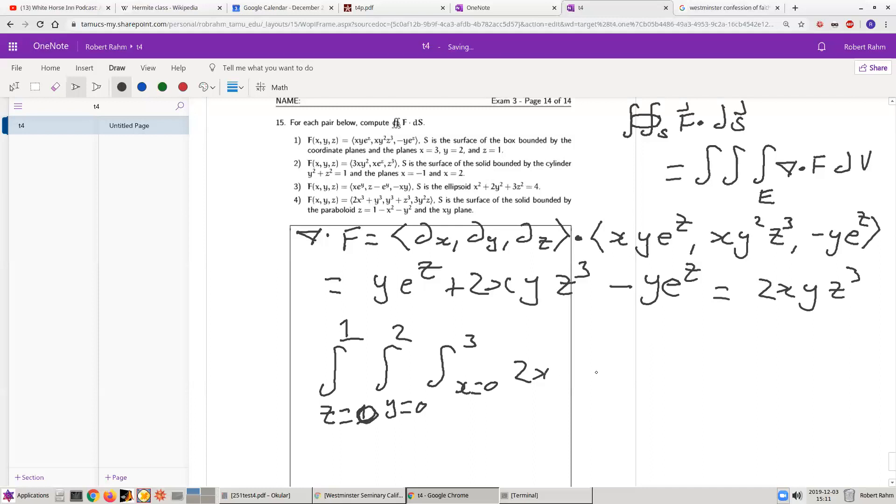and z will go from 0 to 1, 2xy z cubed dx dy dz. And the answer to this is, of course, 9 halves.